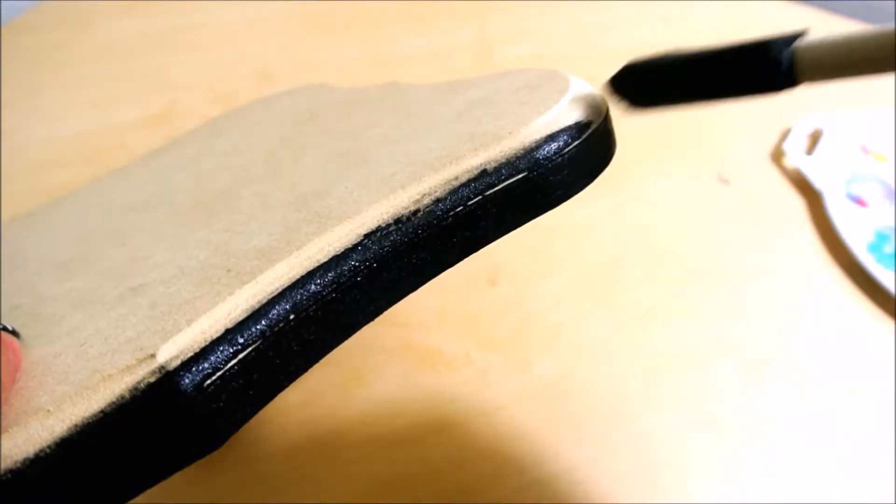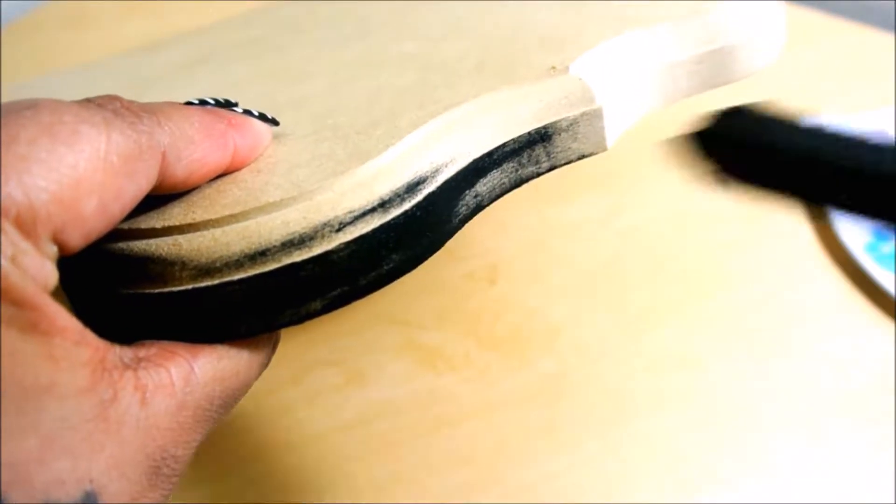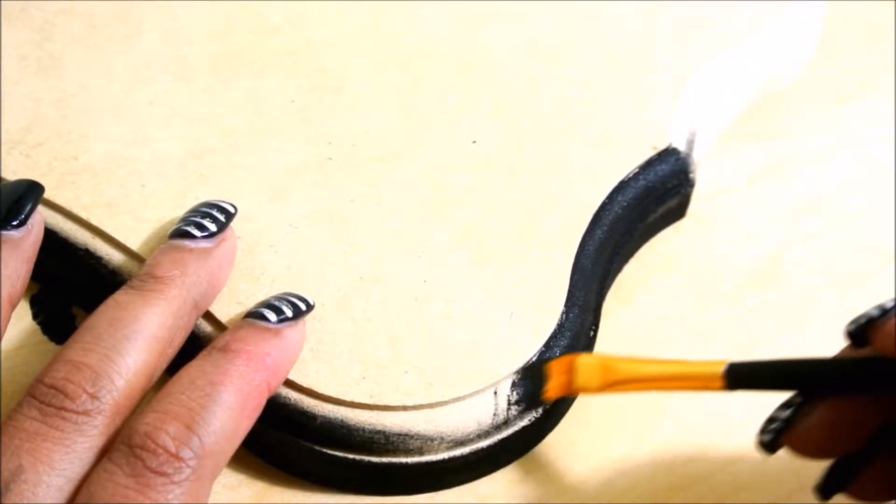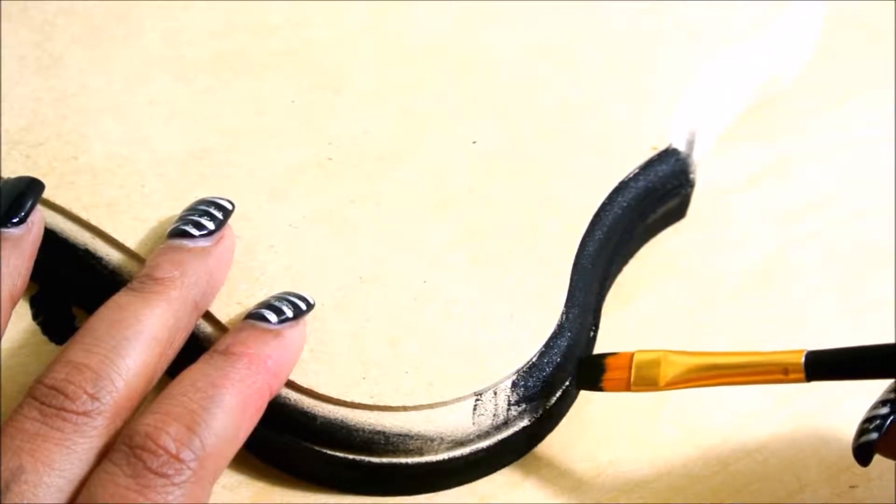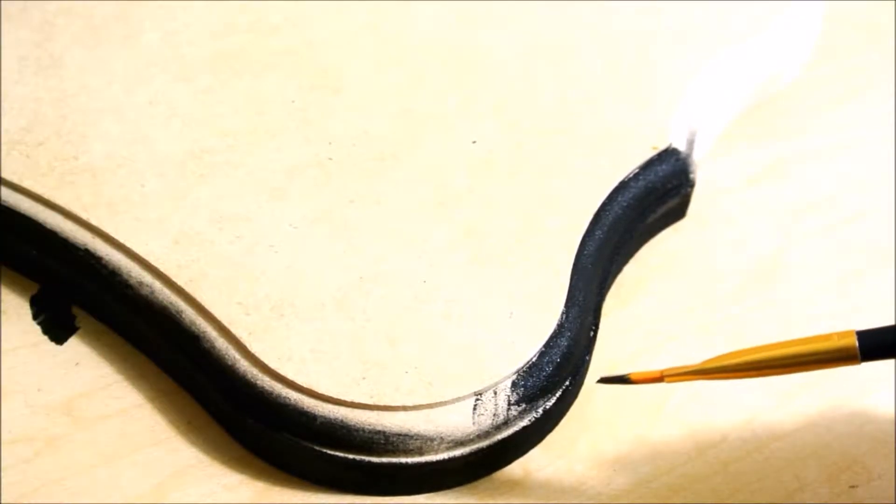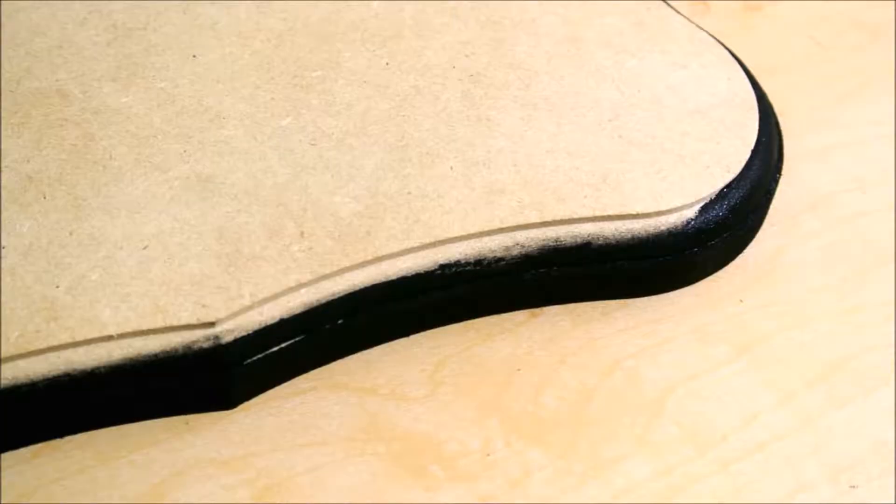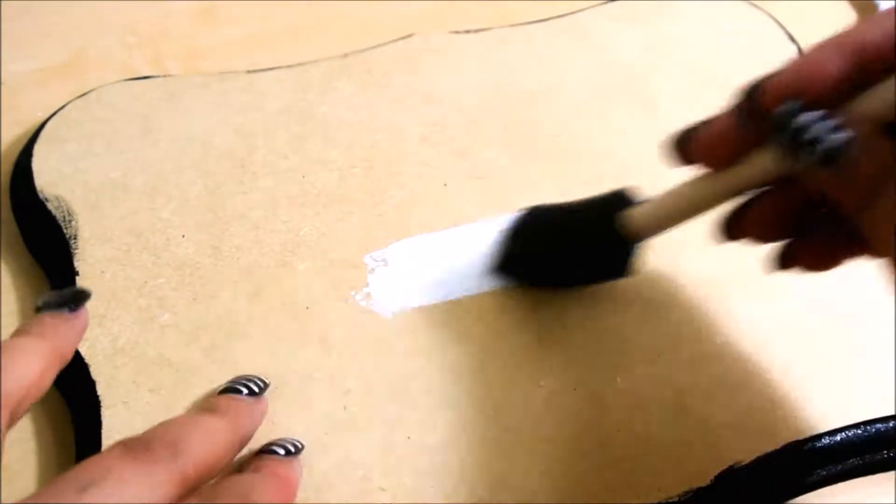I start by painting the sides of the plaque to give it a frame effect. I use black paint for this. This DIY is a two-part, so there's a second part to this. This first part we're just going to be concentrating on the initials, and then the second part will put the name or whatever design you want.